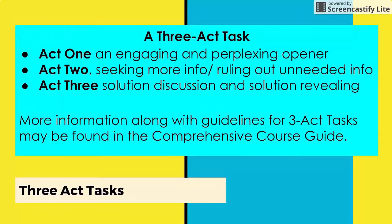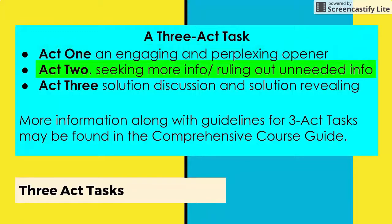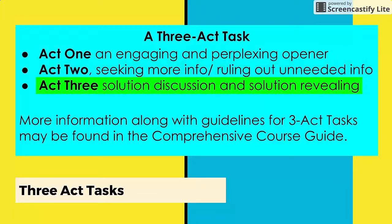A three-act task has three distinct parts, and they're designed to engage students in a real-life example. Typically, we start off with a five-second clip of someone trying to set the world record for fastest texting, and we simply show the clip and let the students start asking questions. The second part is where students seek more information and rule out what's not needed. The third part is where we discuss and reveal the solution.